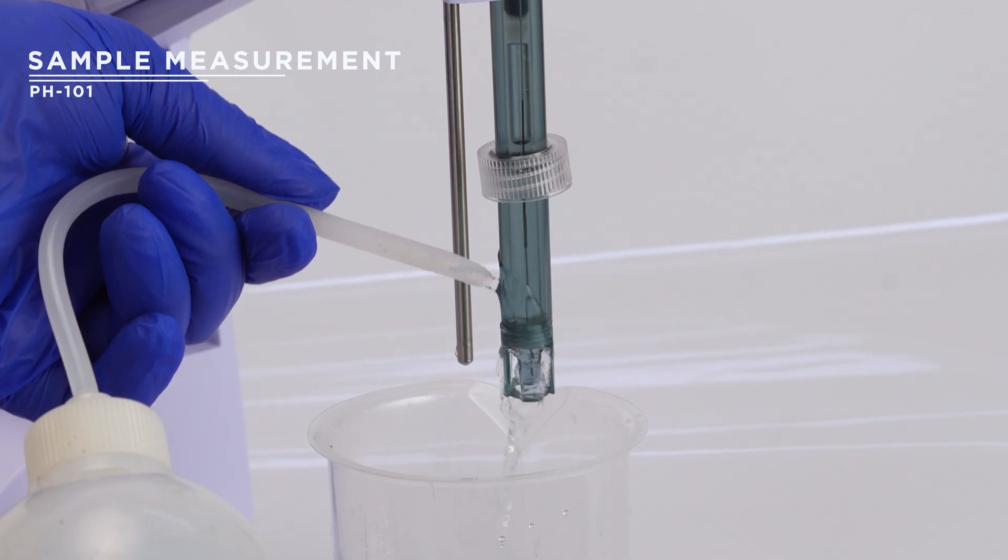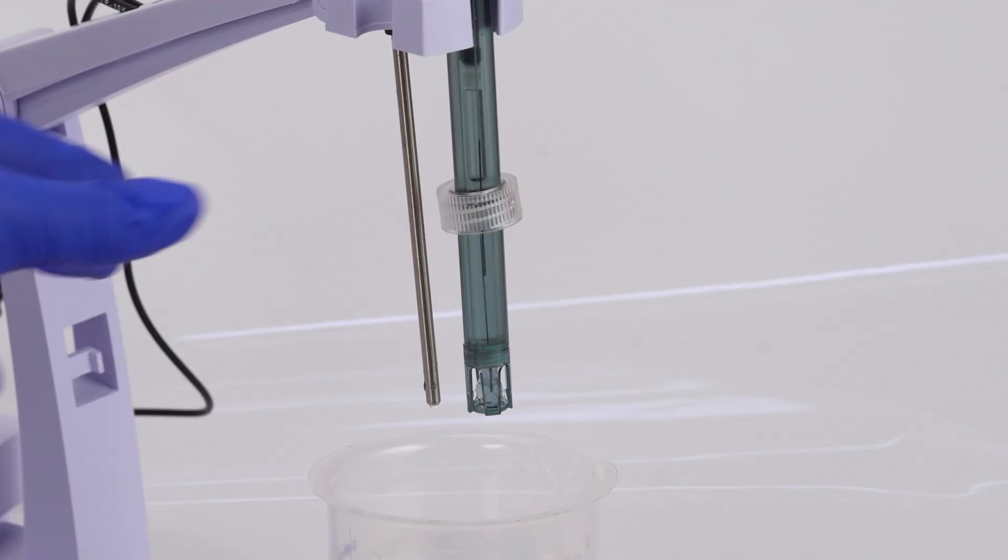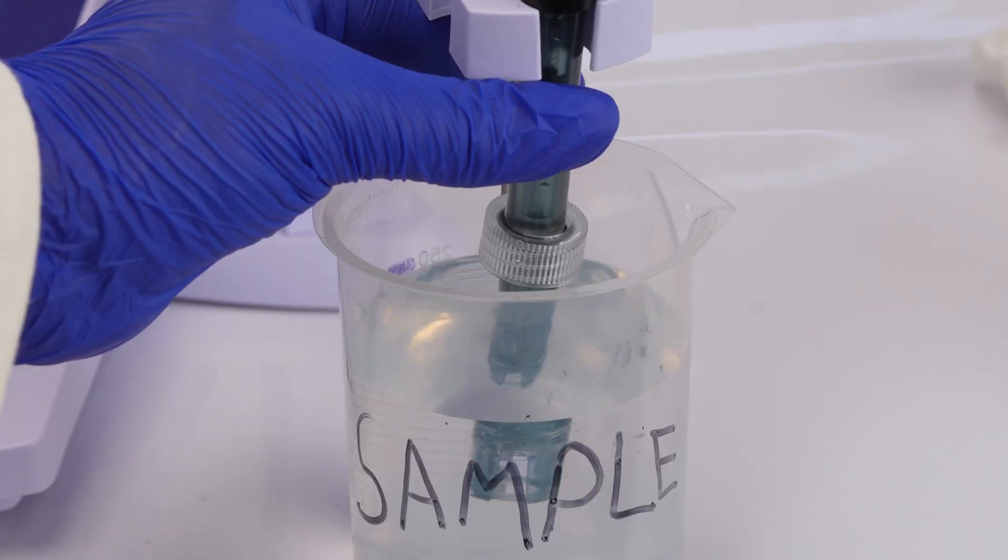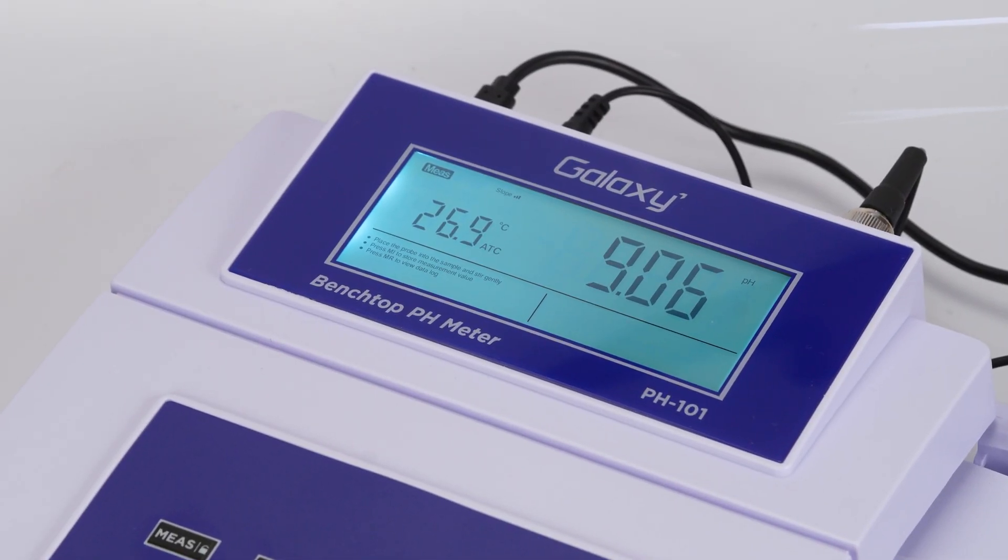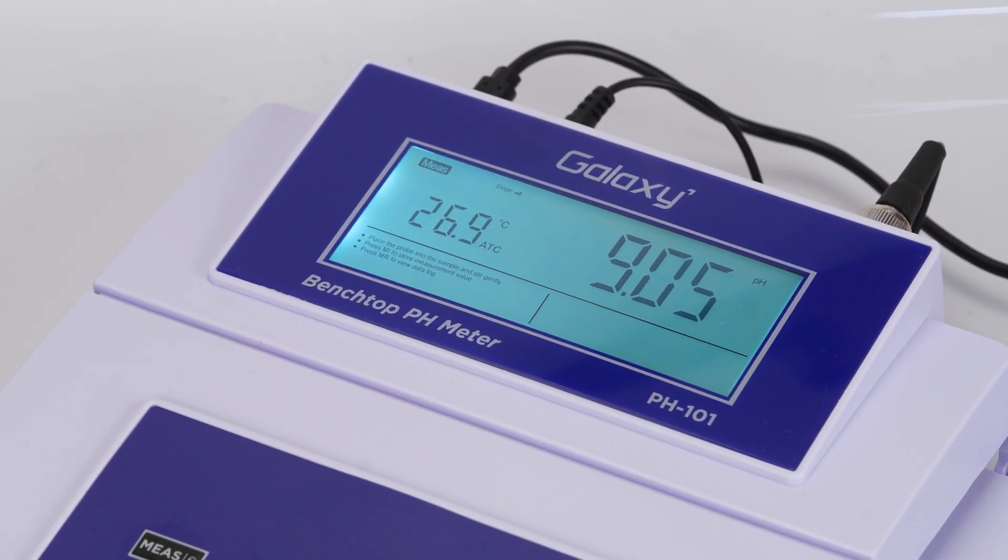Rinse the electrode with distilled water and place it into the sample. If auto hold is enabled, the meter locks the measurement when stable.